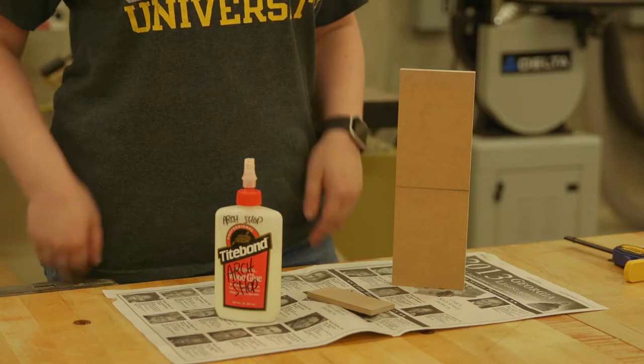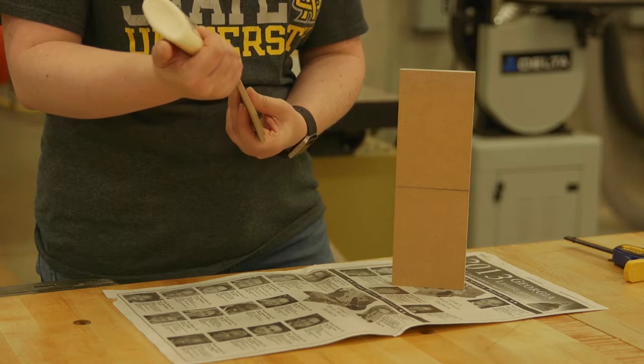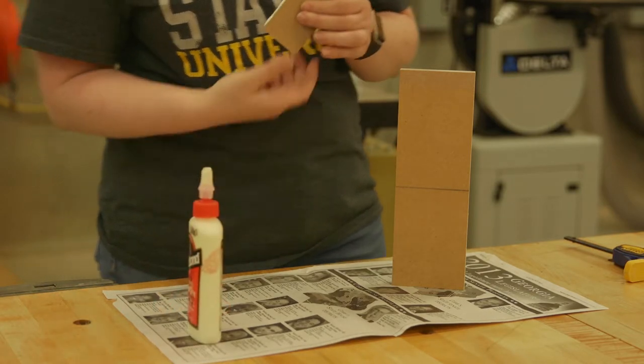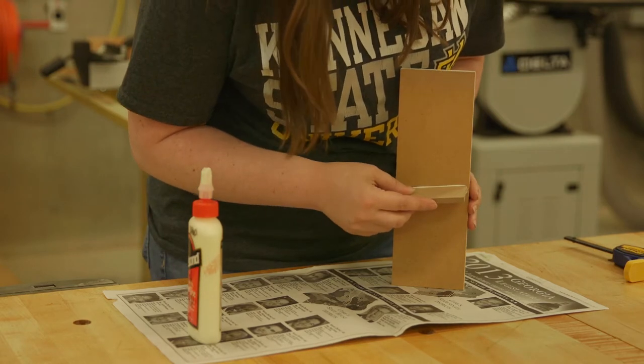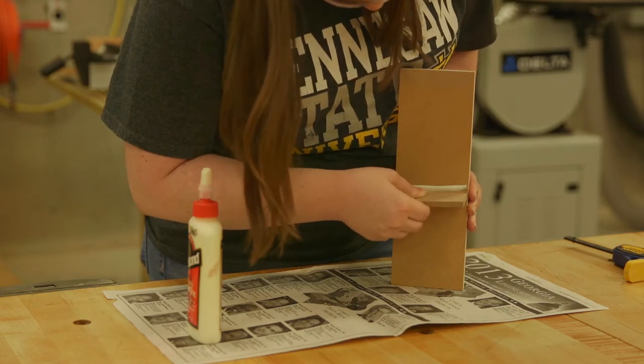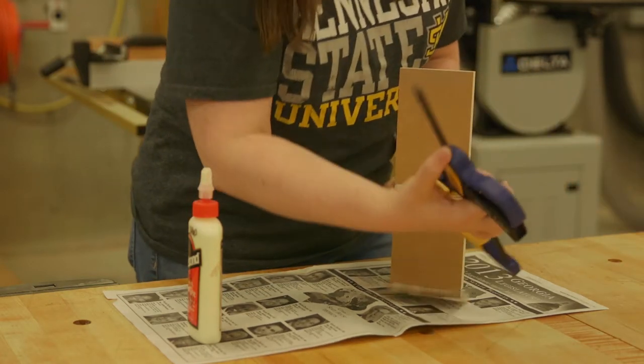Butt joints with thin material, a quarter inch or less, are difficult. By that I mean that it is a challenge to control positioning during assembly, and it is a challenge to apply adequate adhesive without an excessive amount of adhesive, and they can be a challenge to clamp. A rabbit or dado joint might make a better choice.